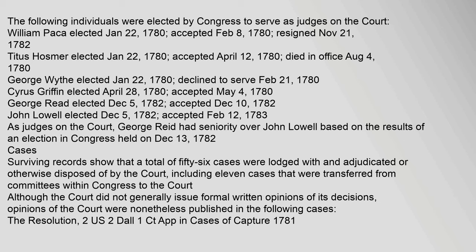The following individuals were elected by Congress to serve as judges on the Court: William Paca, elected January 22, 1780, accepted February 8, 1780, resigned November 21, 1782; Titus Hosmer, elected January 22, 1780, accepted April 12, 1780, died in office August 4, 1780; George Wythe, elected January 22, 1780, declined to serve February 21, 1780; Cyrus Griffin, elected April 28, 1780, accepted May 4, 1780; George Reid, elected December 5, 1782, accepted December 10, 1782; John Lowell, elected December 5, 1782, accepted February 12, 1783. George Reid had seniority over John Lowell based on an election in Congress held on December 13, 1782.